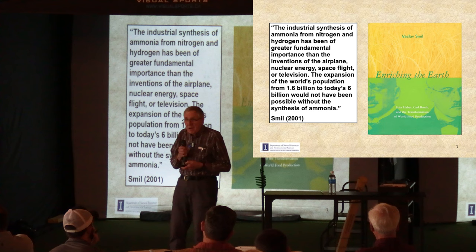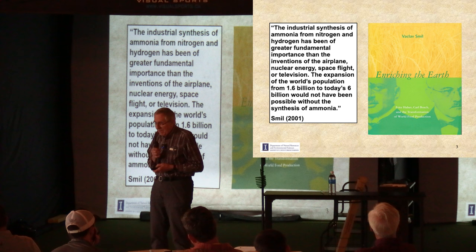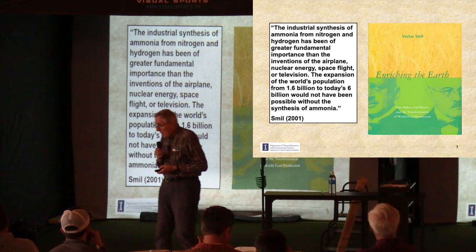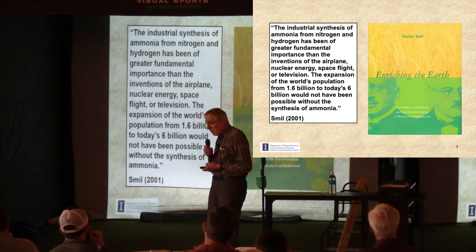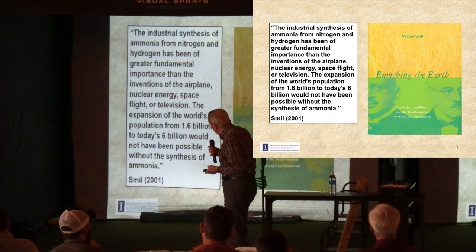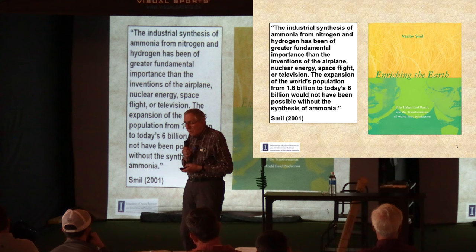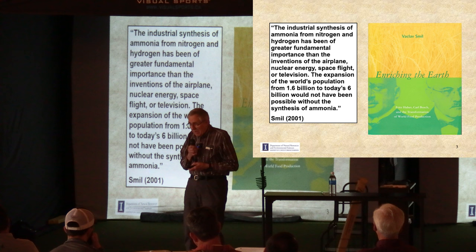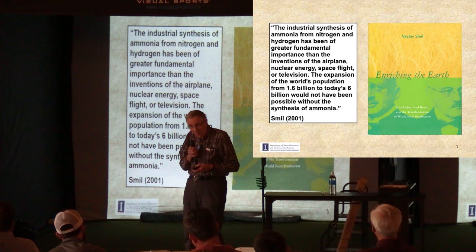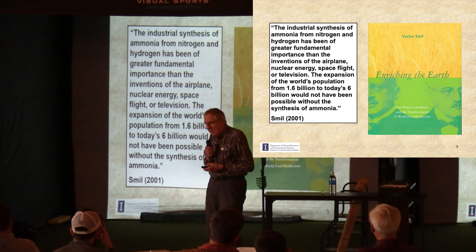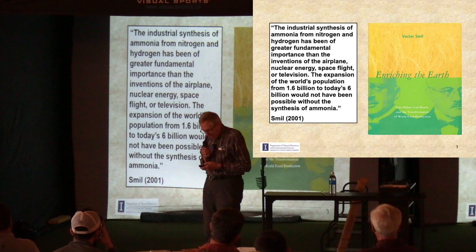The modern era of industrialized agriculture got its start over 100 years ago with the industrial synthesis of ammonia from nitrogen in air. It's the subject of a book by a geographer named Yakov Shmiel at the University of Manitoba. He tells us that the synthesis of ammonia was the most important technological advance of the 20th century because it gave rise to a doubling of world population. I wouldn't take exception with his view, but I do question his title — the book is entitled Enriching the Earth. Maybe by the end of my story, you'll think it's the wrong title too.